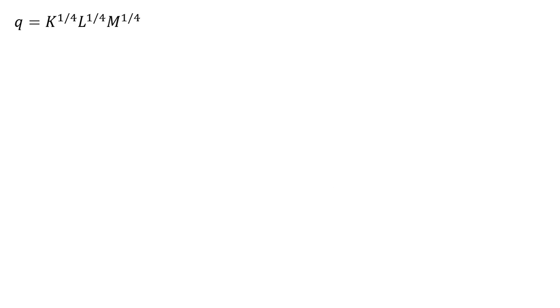So here's our production function. Q, the quantity of output, is a function of units of capital, units of labor, and M, raw materials.